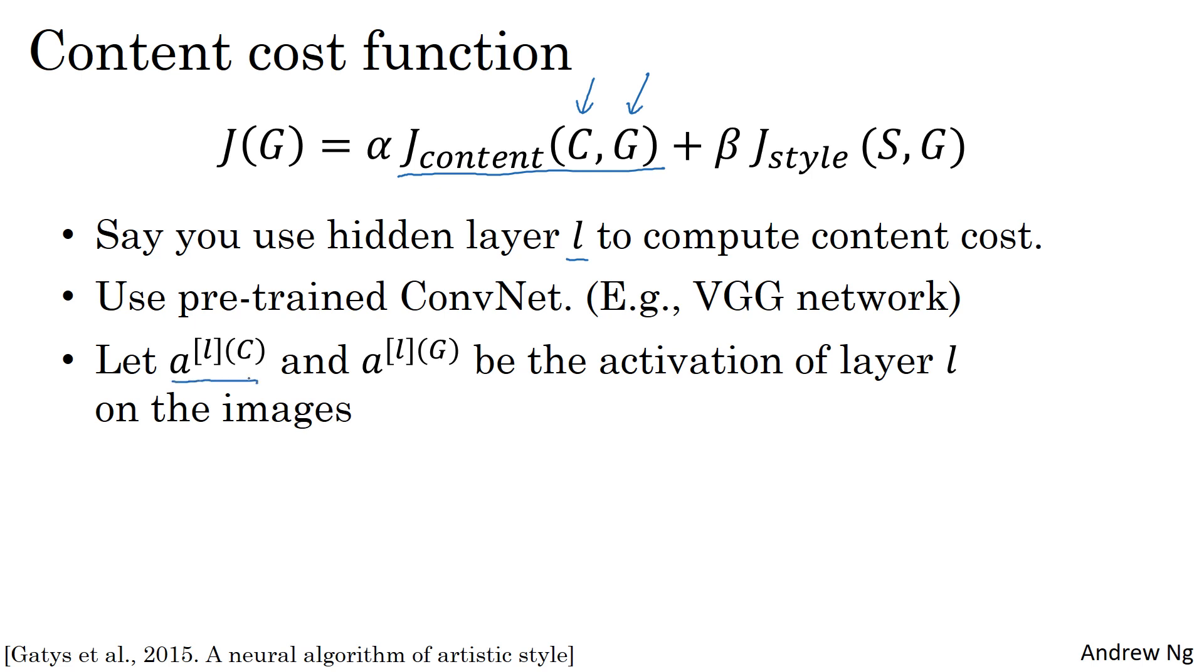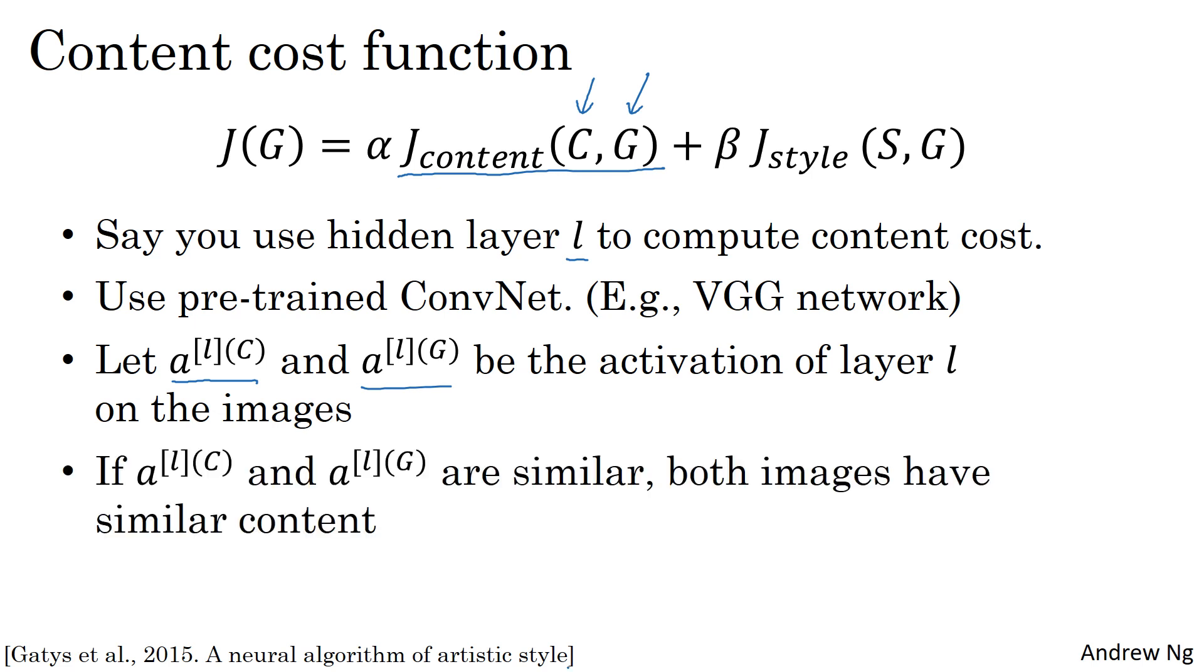So let A^[L](C) and A^[L](G) be the activations of layer L on these two images, on images C and G. If these two activations are similar, that would imply that both images have similar content.